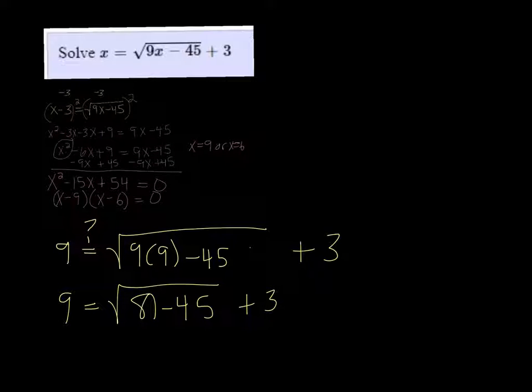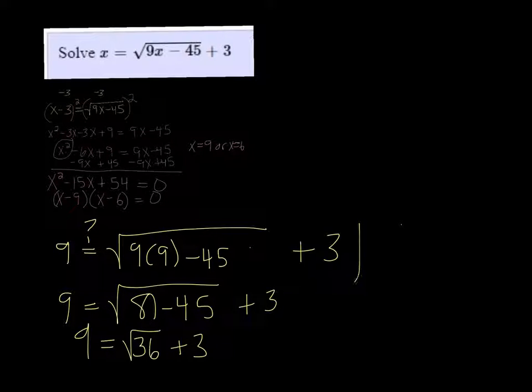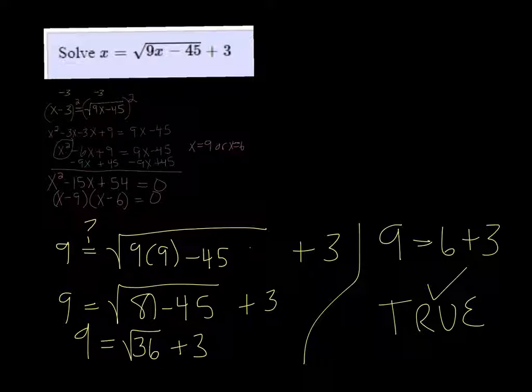81 minus 45 is 36. So we get 9 equals the square root of 36 plus 3. So that's 9 is equal to 6 plus 3. And that's true.